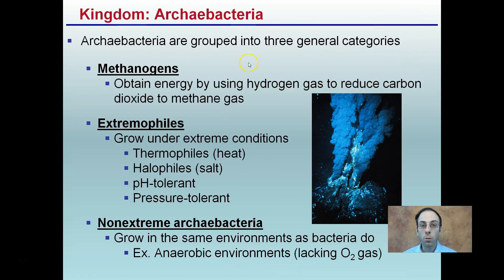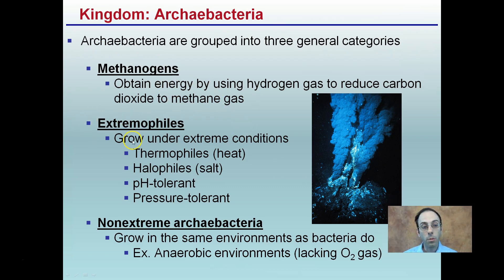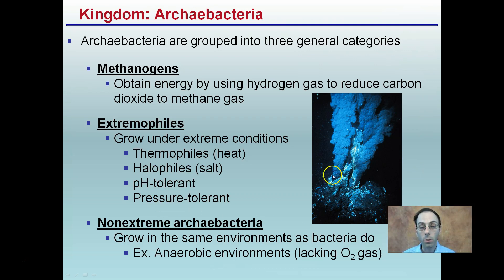Archebacteria are grouped into three general categories based on the conditions they can survive. Methanogens obtain energy by using hydrogen gas to reduce carbon dioxide to methane gas. Extremophiles grow under extreme conditions — thermophiles in extreme heat, halophiles in extreme salt — and they can tolerate a wide degree of pH or pressure. An example of an extreme environment is deep ocean vents, which are an extremely stressful environment.